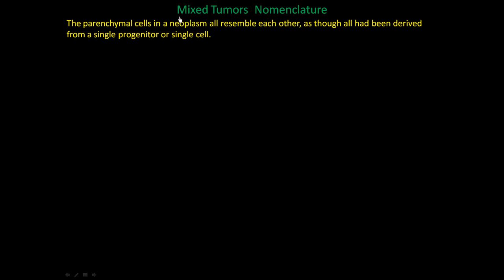Now let's talk about mixed tumors. We have benign tumors, malignant tumors, and mixed tumors, which can be benign or malignant. The parenchyma cells in a neoplasm all resemble each other — for example, if a liver cell goes awry, it produces many more of the same type of cell. When you look at it under a microscope, all cells in the tumor look like the liver cell, as though they all derive from a single progenitor.